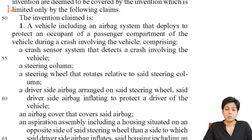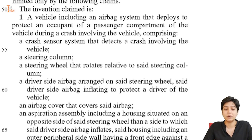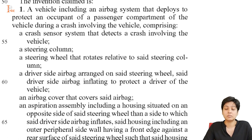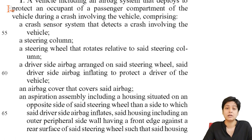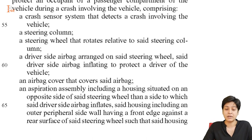Next, we will look at the claims. The invention claimed is a vehicle equipped with an airbag system designed to provide occupant protection in the event of a crash. The system comprises several key components. First, the Crash Sensor System plays a crucial role in detecting a crash involving the vehicle. It can include various sensors such as MEMS accelerometers or crash detecting sensors strategically placed throughout the vehicle, monitoring factors like acceleration, impact force, or vehicle deformation to determine if a crash has occurred. Second, the Driver Side Airbag, positioned on the steering wheel, inflates rapidly during a crash to cushion and protect the driver from impact forces. The airbag is made of durable material such as plastic film and is designed to effectively deploy and deflate to minimize injury risks.